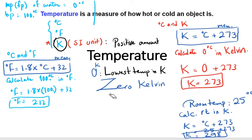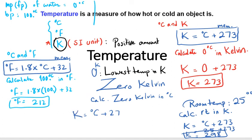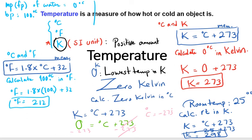Let's find out what zero Kelvin is in degrees Celsius. Using K = °C + 273, we write: 0 = °C + 273. Adding −273 to both sides, degrees Celsius equals −273. This is the lowest temperature we consider in our universe — scientists believe this is the minimal possible temperature.